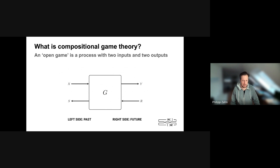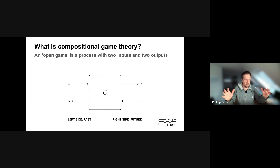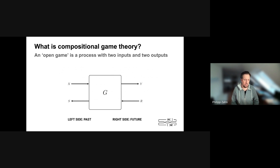What is compositional game theory? It's a new mathematical language for reasoning about games. The key feature is that you can build games in a distributed way. So instead of building one block as one game, you can divide things up into pieces — you have one game and another game — and then you have systematic ways of putting these games together.